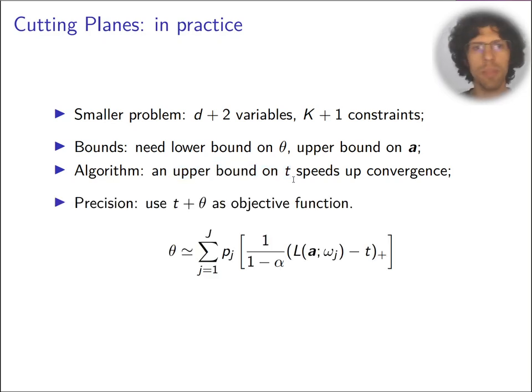Another thing that we discovered is that we could replace the objective function and estimate only the random part and split t, which is deterministic outside of the estimates, and we were able to get much more precision on the solver.